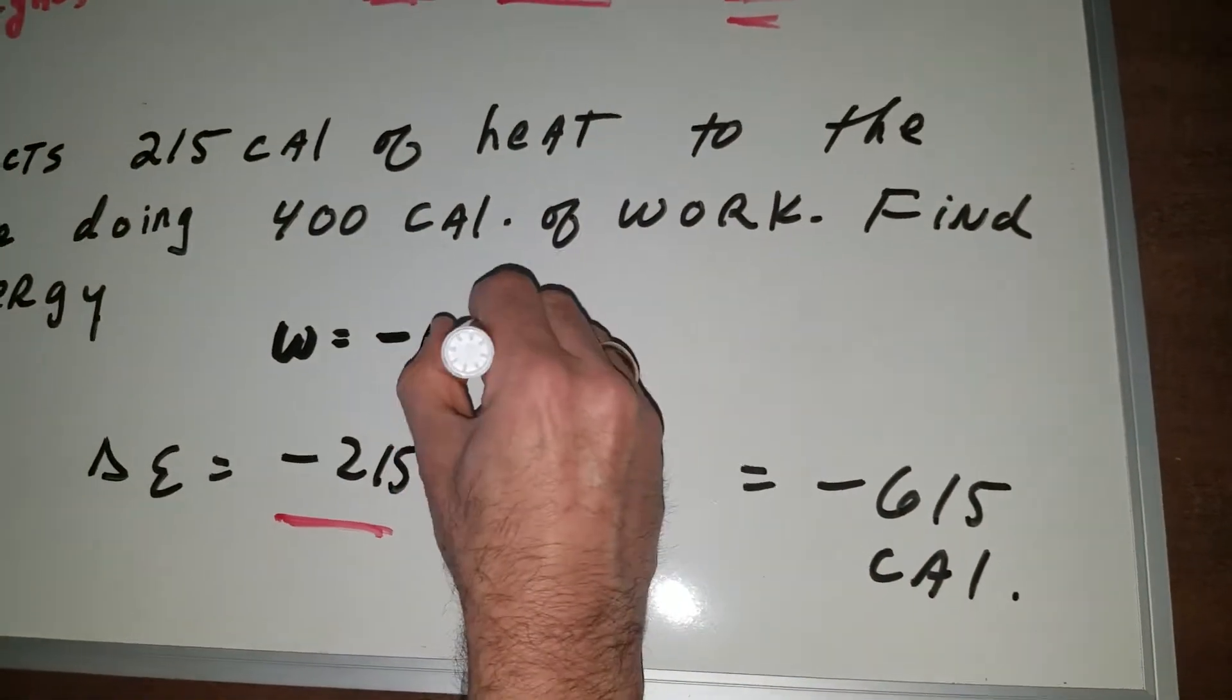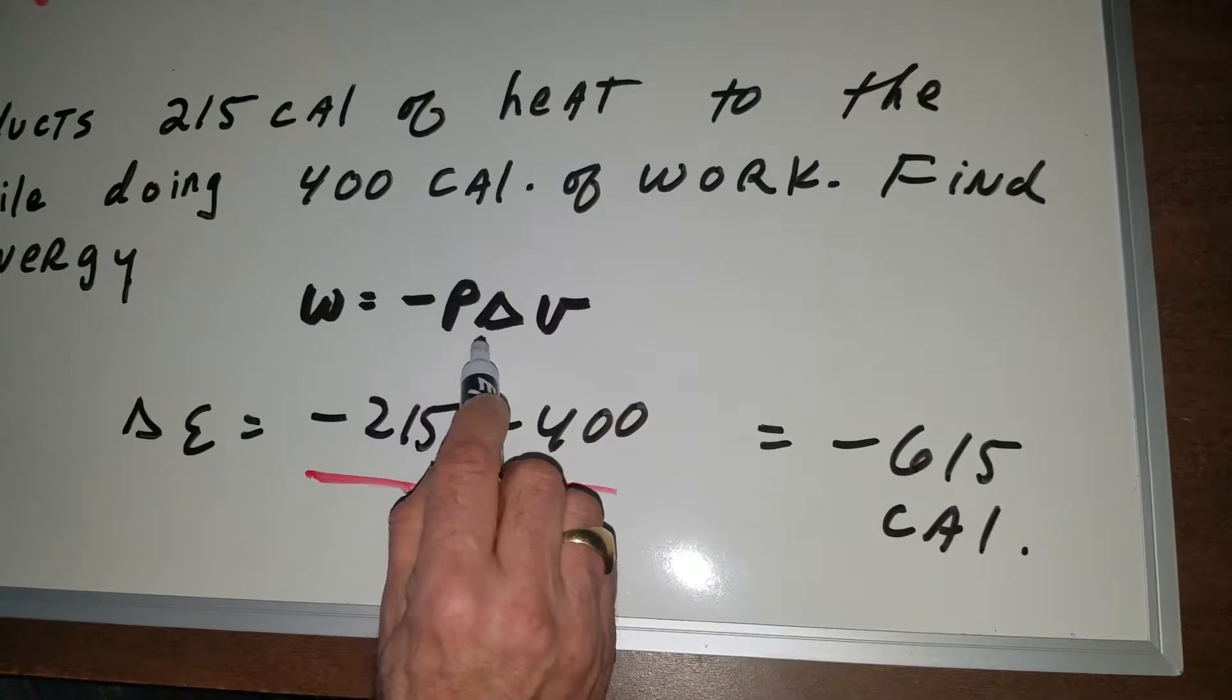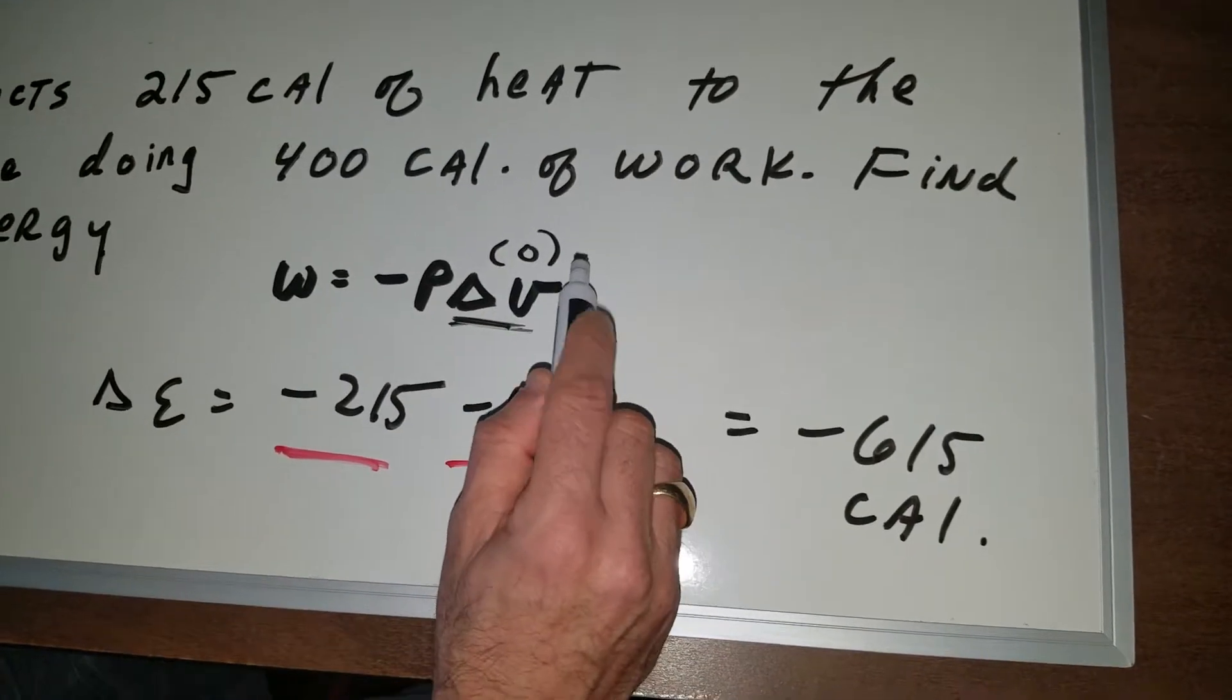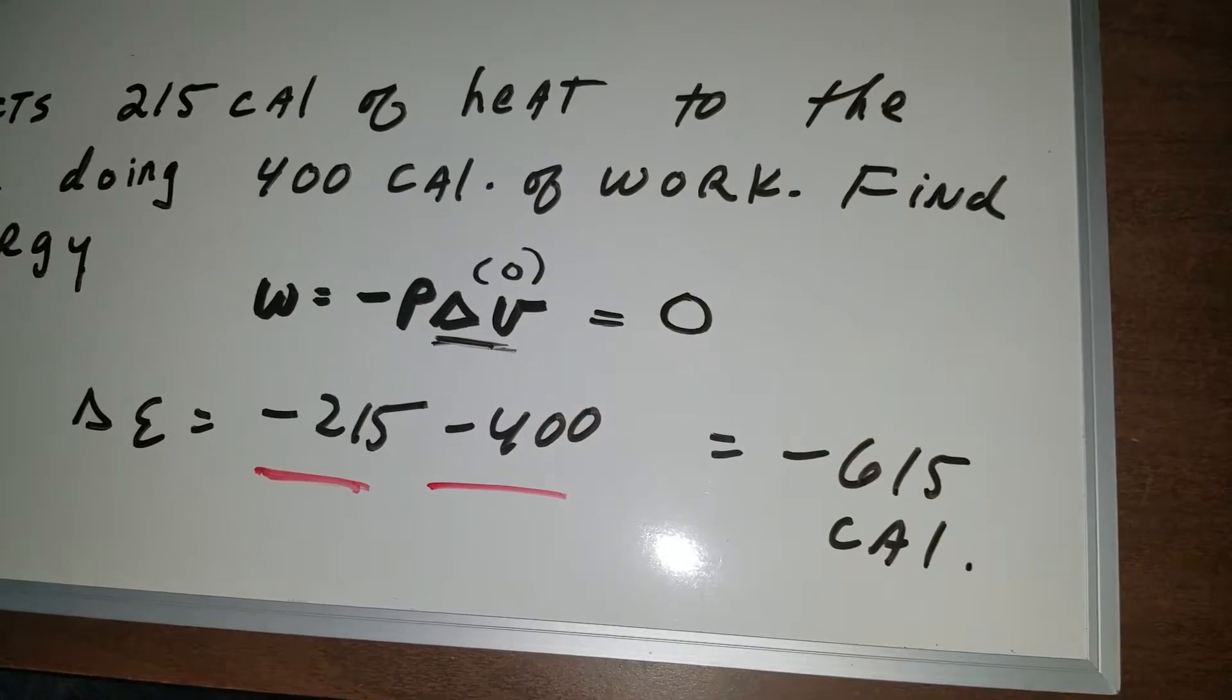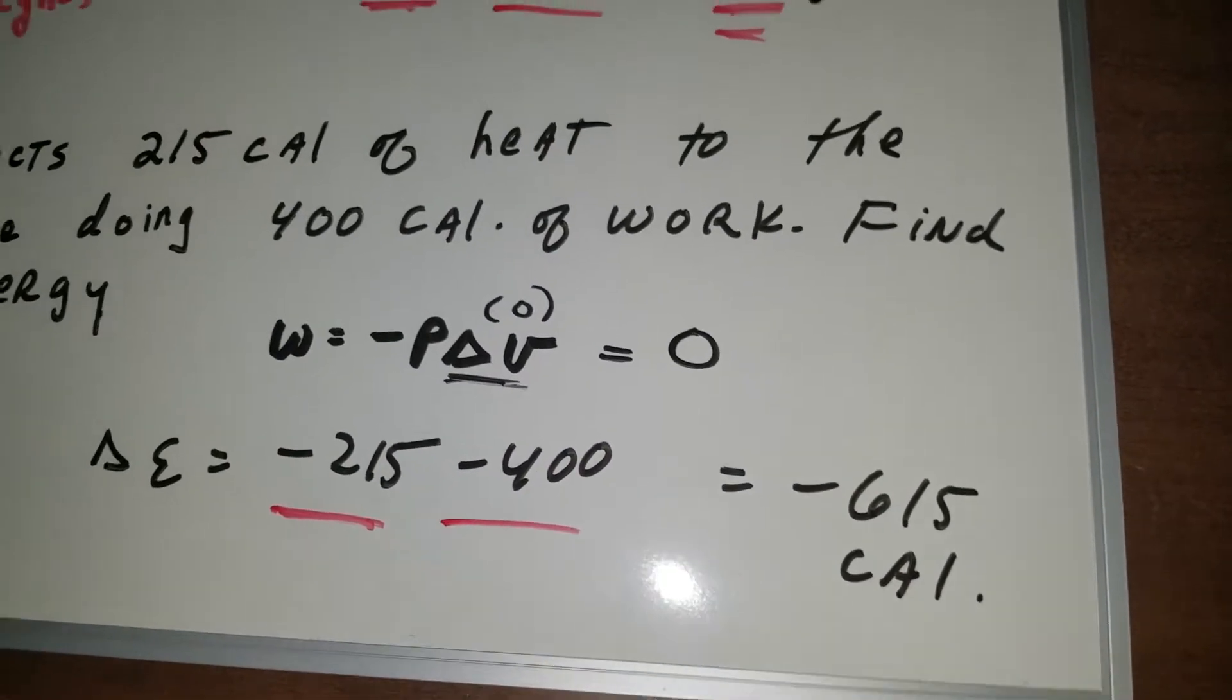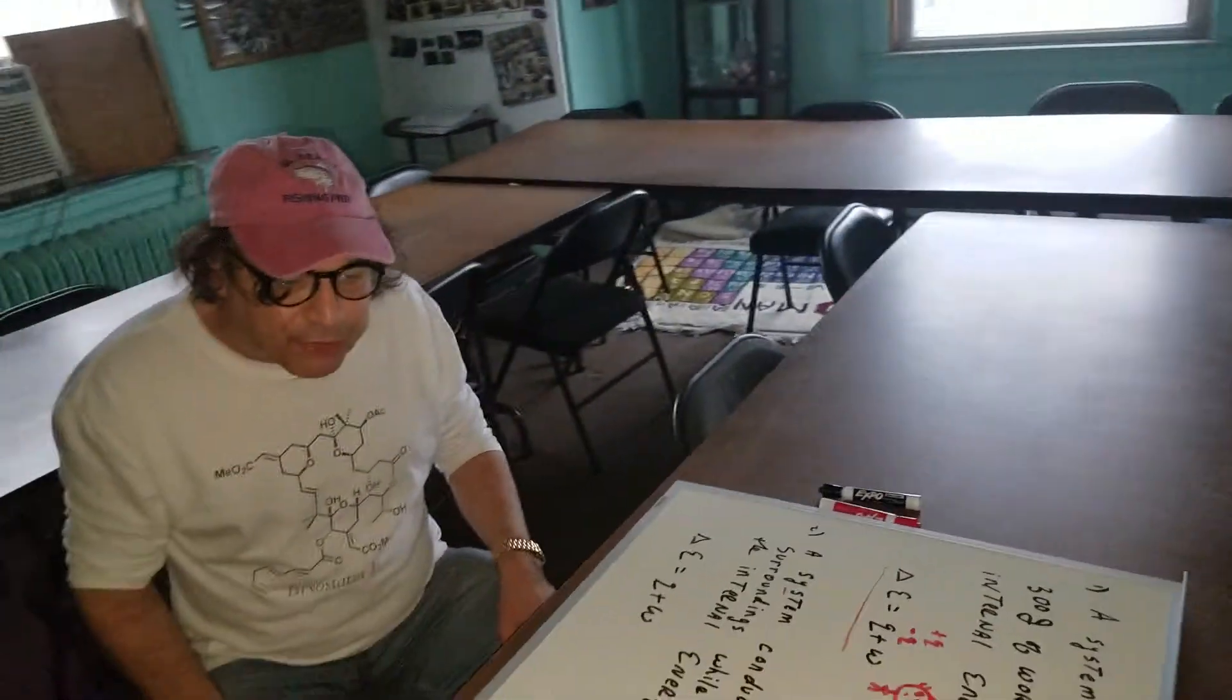So obviously, if the volume is constant and not changing, that means in an isochoric system there's no change in volume. So if you put in a zero, the work done in an isochoric system is equal to zero. There you have it. If you know that much, I think you'll do fine.